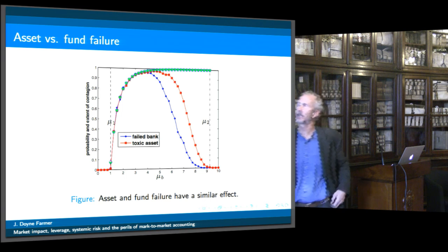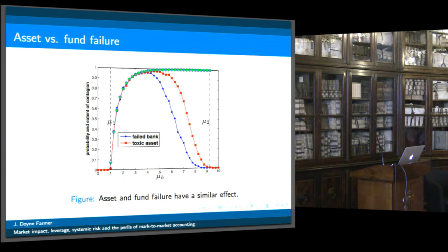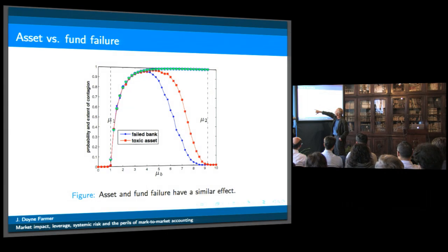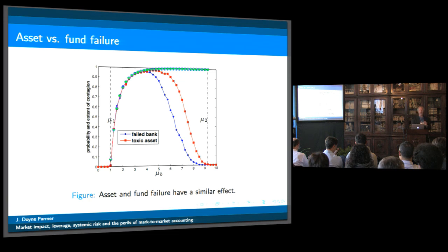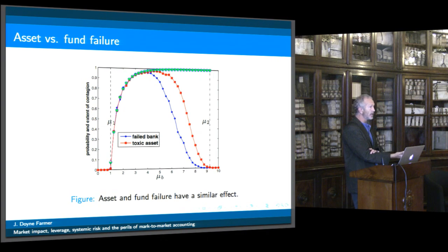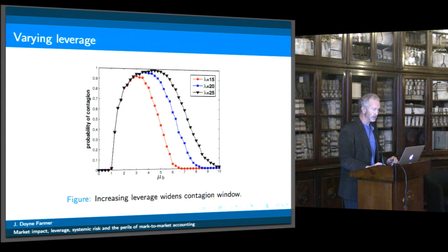We can look at asset versus fund failure — shocking it either by suddenly depressing the price of an asset, or by causing a bank to fail. We see slightly different behavior in terms of magnitude because the size of the initial shocks are different, but we see exactly the same threshold for the contagion window. The system is either unstable or it isn't — if it's unstable, it amplifies instabilities; if not, it doesn't.